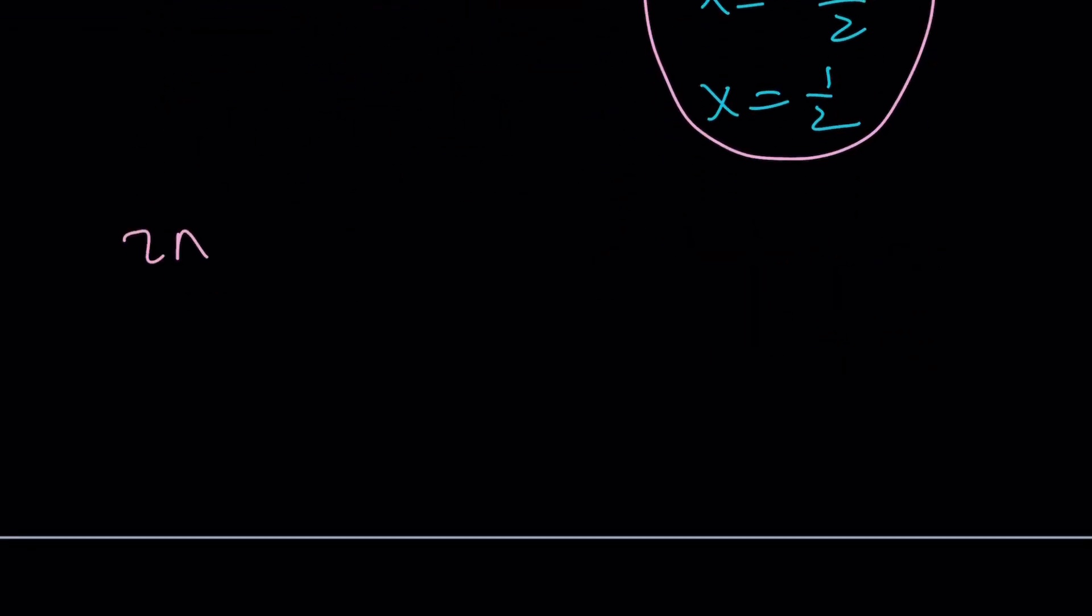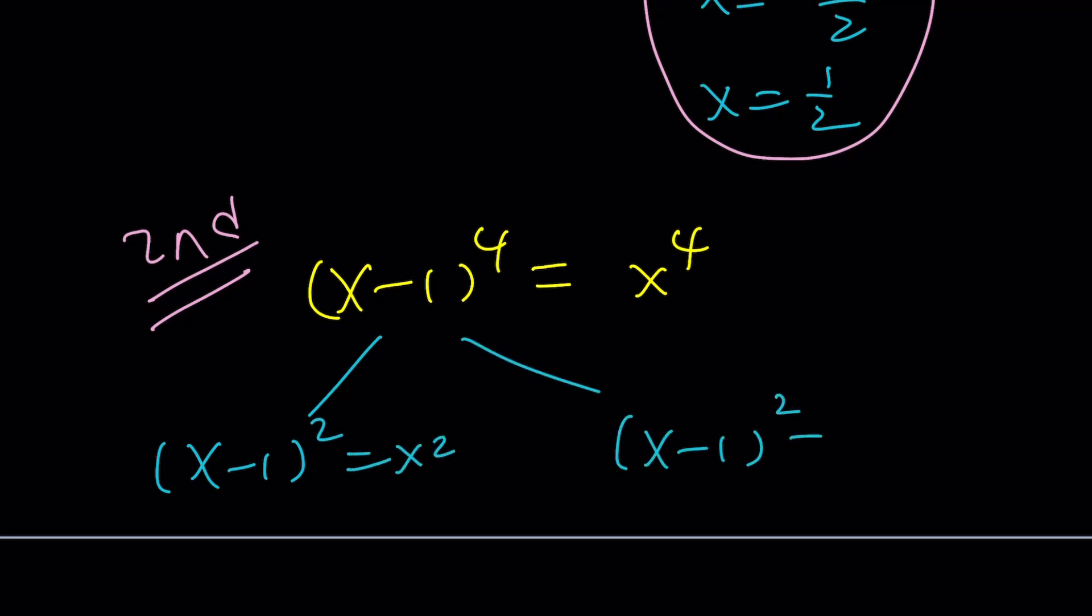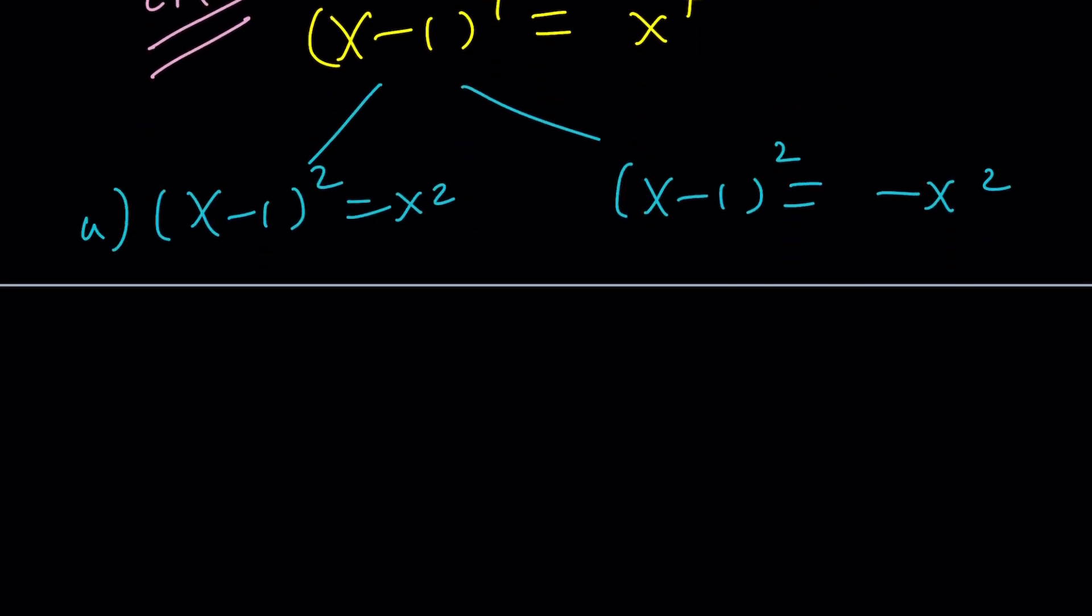Let's take a look at the second method real quick. With the second method, we have (x-1)^4 = x^4. We're going to take the square root of both sides. When we take the square root, we have to consider the absolute value, because these are even powers. So we're going to get two things from here: either (x-1)^2 = x^2, or (x-1)^2 = -x^2. That's going to give us two quadratics.